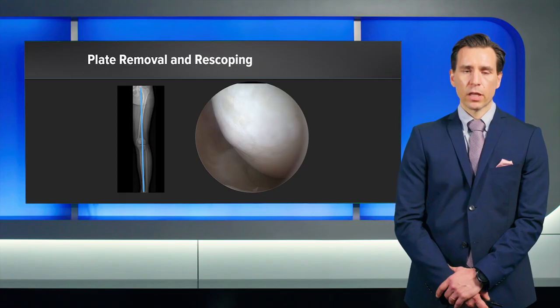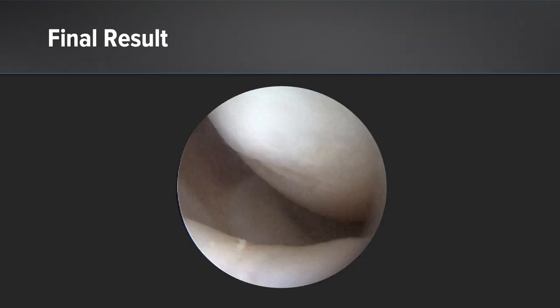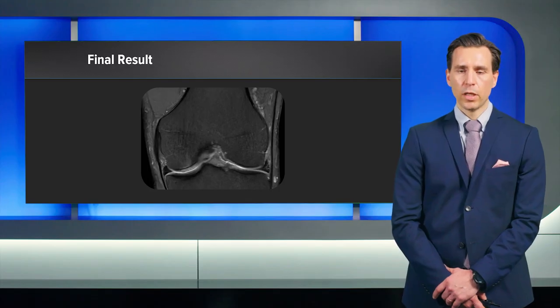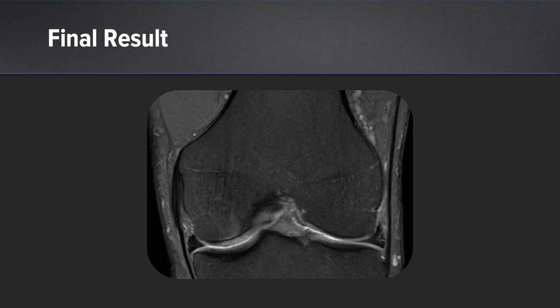We decided to perform a plate removal and at the same time a re-scope, where we saw very good high-quality cartilage repair but with mild hypertrophy, which we trimmed down during the same arthroscopy. At the final result, we saw no impingement at the opposing meniscus or tibia, and the patient was absolutely pain-free. On a subsequent MRI 12 months after the procedure, we saw very good cartilage repair at the medial condyle with no more hypertrophy.